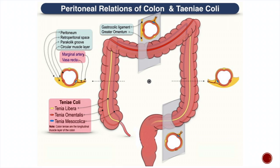The ascending and descending colon, including the rectum, were all mesentery-covered organs in embryonic life. But due to different growth and modifications in peritoneal relations, these portions of the large intestine again became retroperitoneal — these are called secondary retroperitoneal organs. The tinea towards the mesentery border is called Tinea Mesocolica. The tinea opposite to that, from where the visceral peritoneum continues as parietal peritoneum with the paracolic groove in between, is towards the paracolic side — that is Tinea Omentalis.